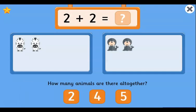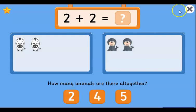We have two zebras and two giraffes — how many animals are there all together? Let me take out my pen. One, two — now we continue — three and four. So I write four over here so I don't forget. Remember, when you are counting, draw a line or a dot so that you know you counted that picture. Now let's click on four — brilliant, very good!